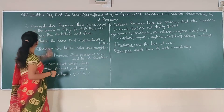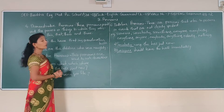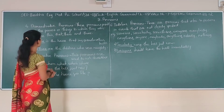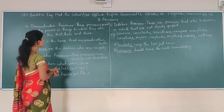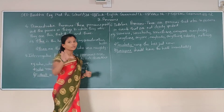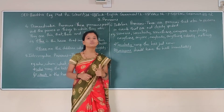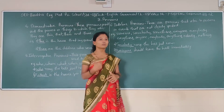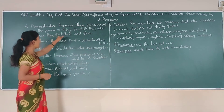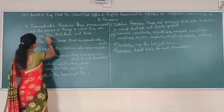Now the fourth type: demonstrative pronouns. Demonstrative pronouns means these pronouns point out the person or things to which they refer. It is just pointing out the things, the person which they are saying about. The demonstrative pronouns are: this, that, and those.